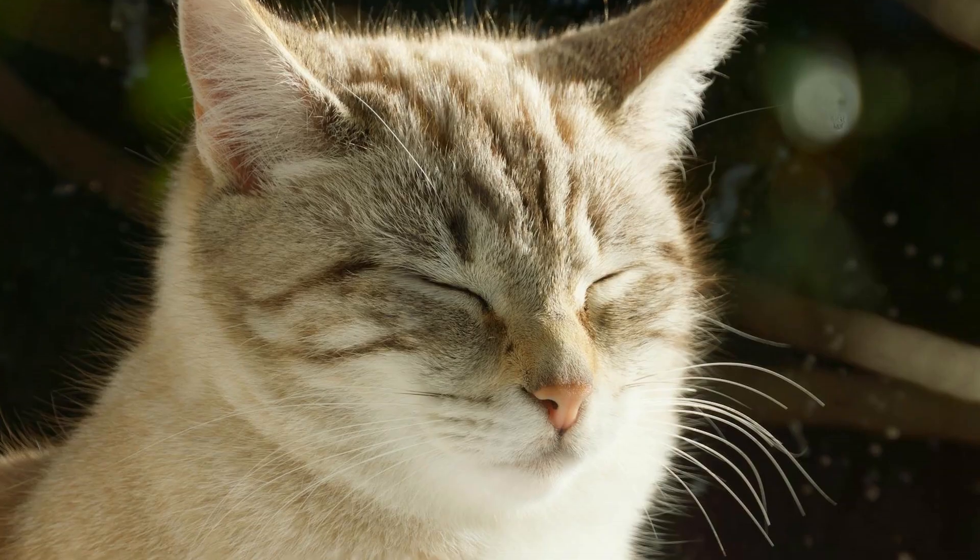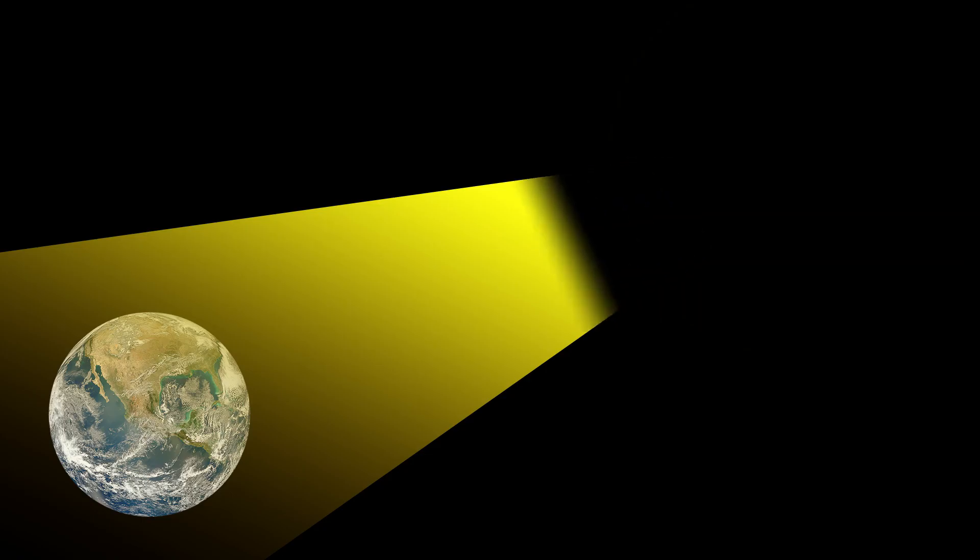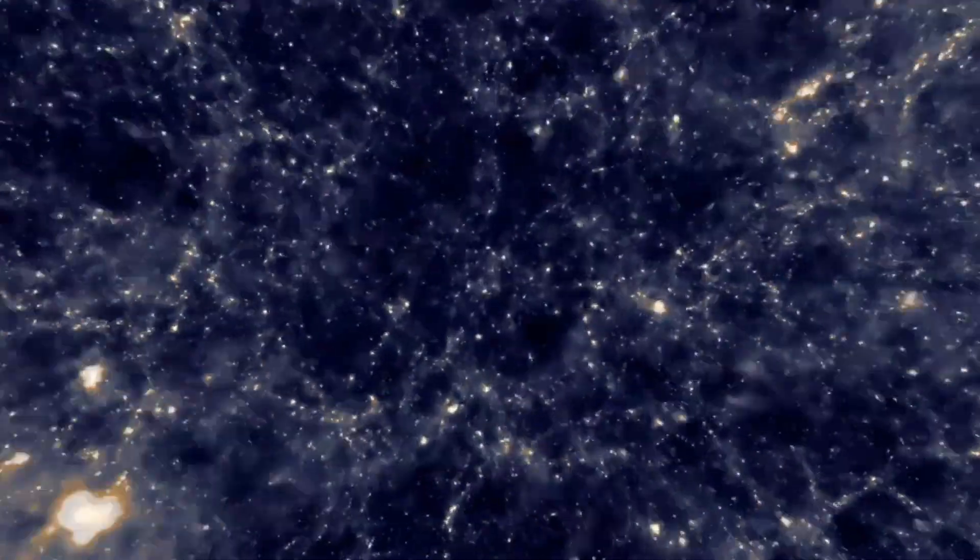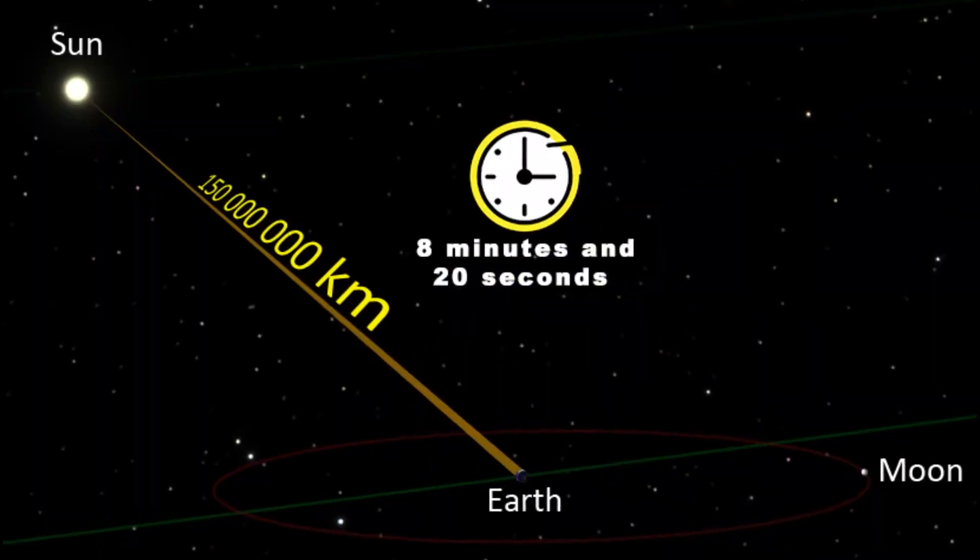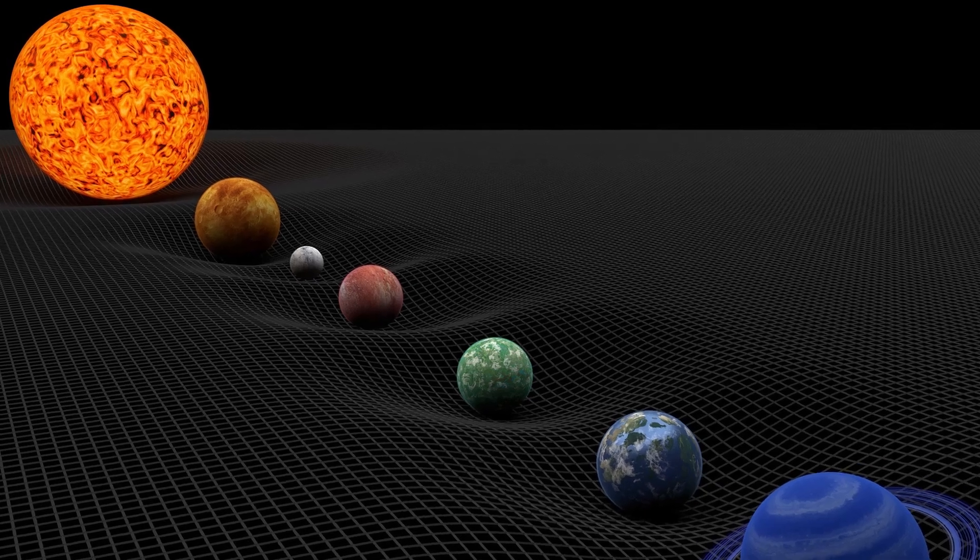If the Sun disappeared, we would still be receiving light for another 8 minutes, which is the time light takes to make the journey between the Sun and Earth. But what about gravity? Would it be turned off instantly the moment the Sun's mass is gone?